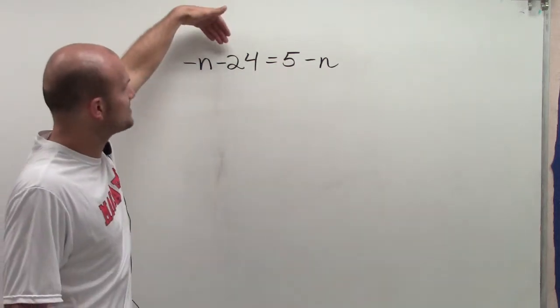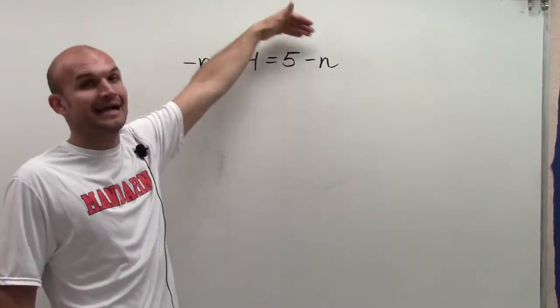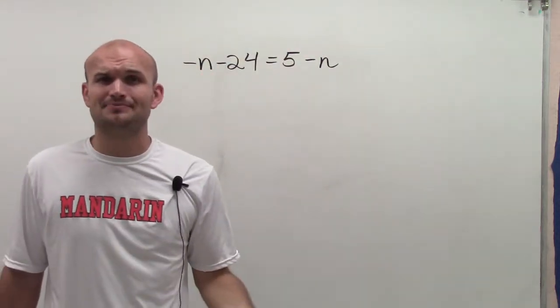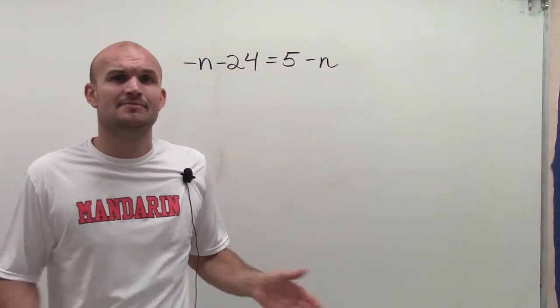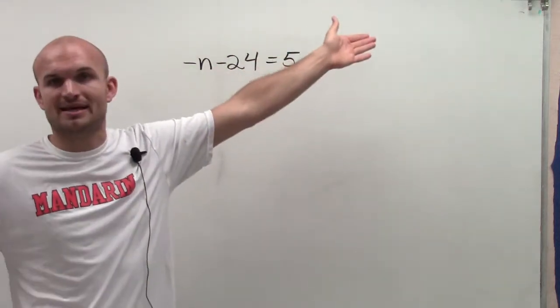So here on the left side I'm subtracting 24, and on the right side I'm adding 5. So no matter what number you pick, it's impossible to get the exact same number equal to one another. Let's say n equals 0. Let's just make it easy on ourselves.